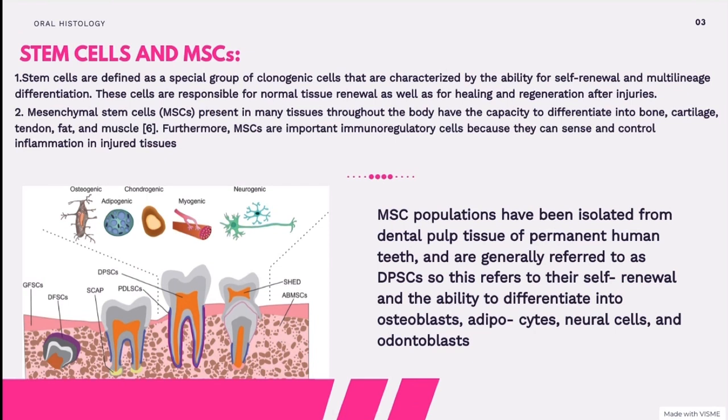Scientists have also isolated and characterized different types of mesenchymal stem cells from the oral and maxillofacial regions. The aim of this review is to describe new findings in dental stem cell research, plus their potential applications in tissue regeneration and treatment of inflammatory-related diseases. Most importantly, we want to know what mesenchymal stem cells can do in dental pulp. Mesenchymal stem cells have been isolated from dental pulp tissue of permanent human teeth, and those cells are referred to as dental pulp stem cells, known for their ability of renewal and differentiation into osteoblasts, adipocytes, neural cells, and odontoblasts.